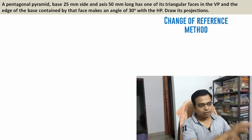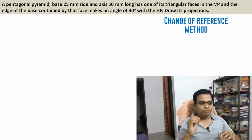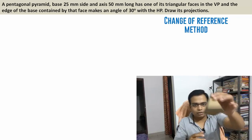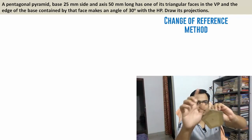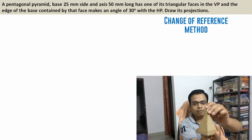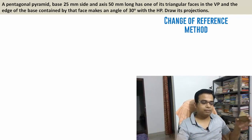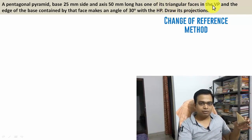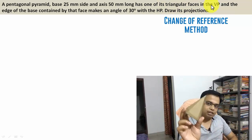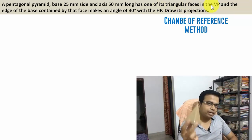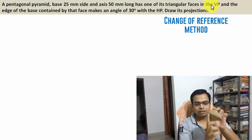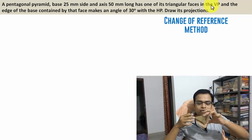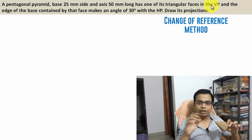Here's the problem: a pentagonal pyramid with base 25 mm side and axis 50 mm long. What you see in front of you is a pentagonal pyramid — all the base edges are 25 mm, and the axis length from the center to the apex is 50 mm. The condition given is: it has one of its triangular faces in the VP. This pentagonal pyramid has as many as five triangular faces, and one of these is in contact with the vertical plane.